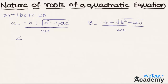Here, delta is nothing but b square minus 4ac, and this quantity is called the discriminant of the equation ax square plus bx plus c equal to zero. The nature of the roots alpha and beta mainly depends on the value of delta.